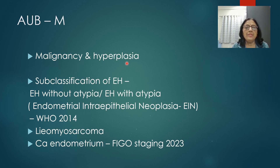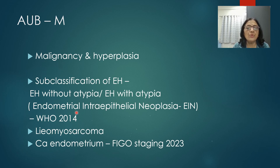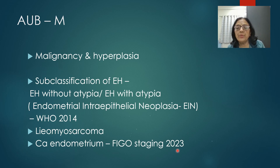AUB-M covers malignancy as well as hyperplasia. Sub-classification of endometrial hyperplasia follows WHO 2014, with only two types: endometrial hyperplasia without atypia, and endometrial hyperplasia with atypia, also called endometrial intraepithelial neoplasia (EIN). Leiomyosarcoma is also included under AUB-M, and FIGO staging of carcinoma endometrium 2023 is incorporated.